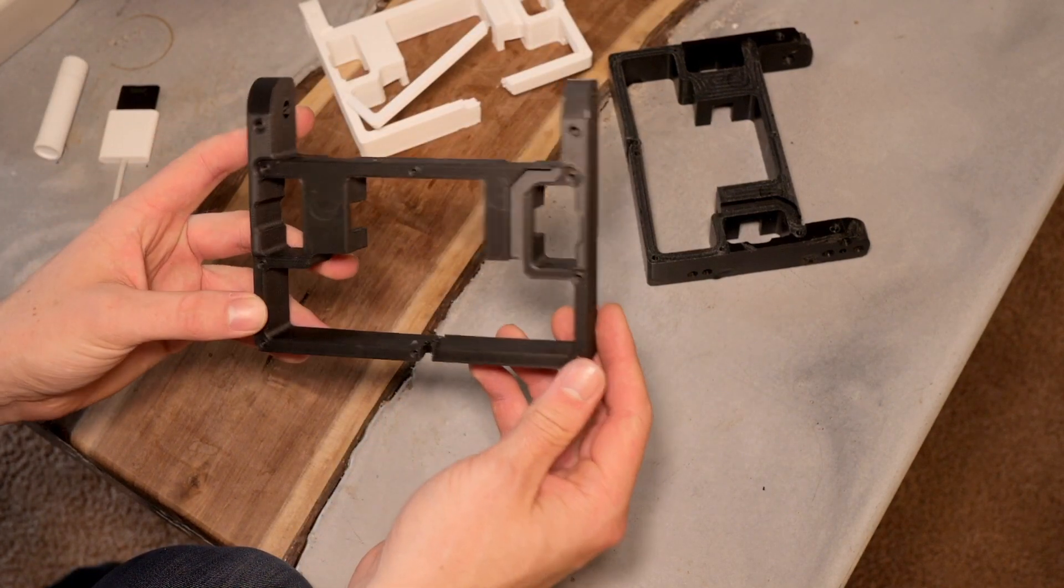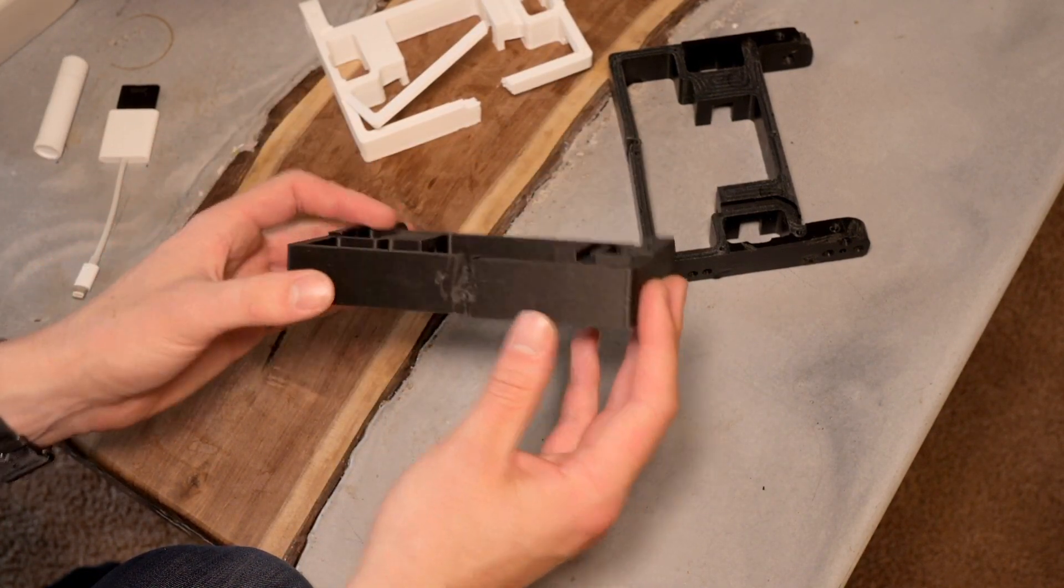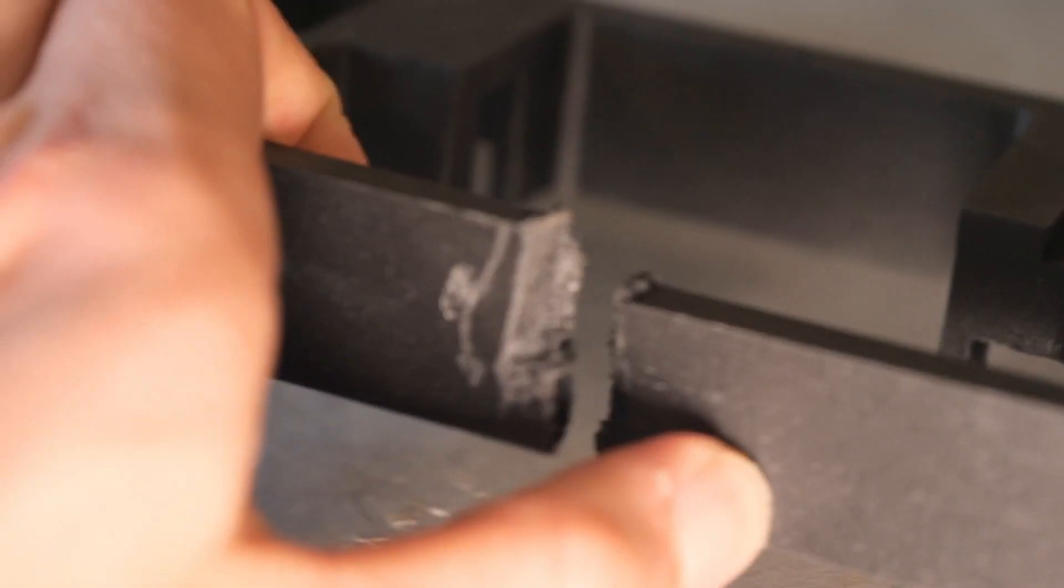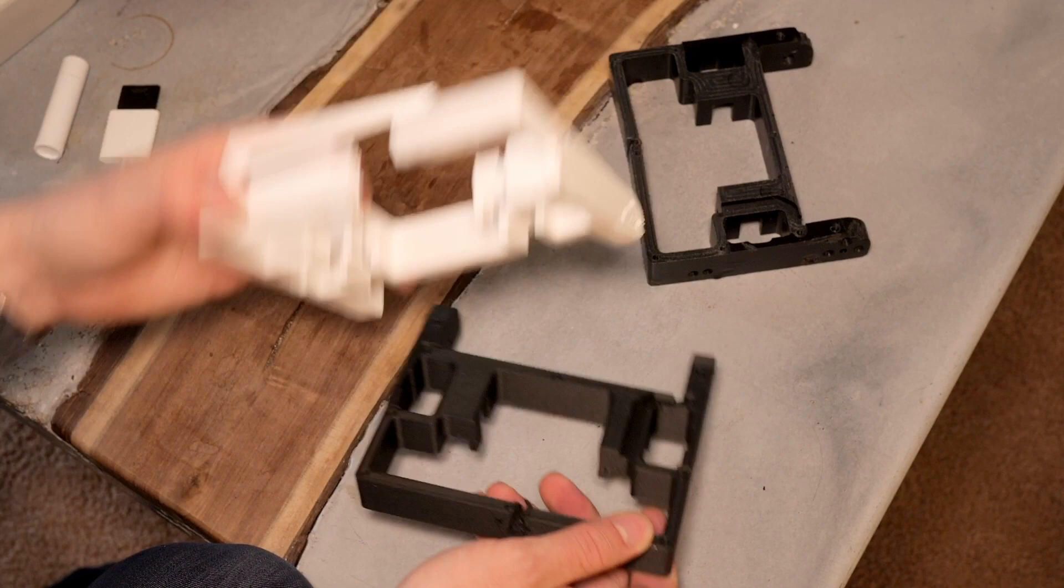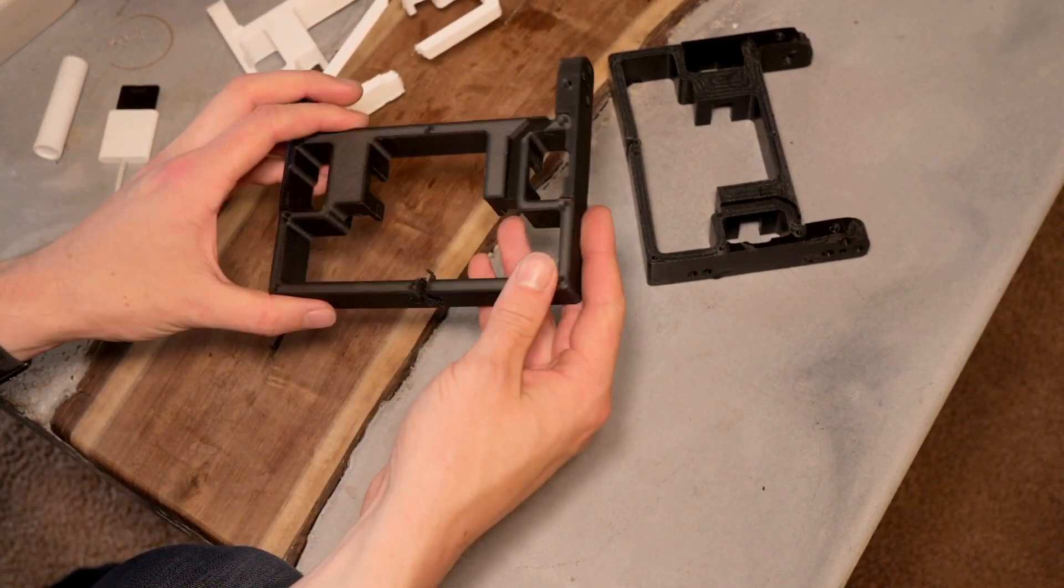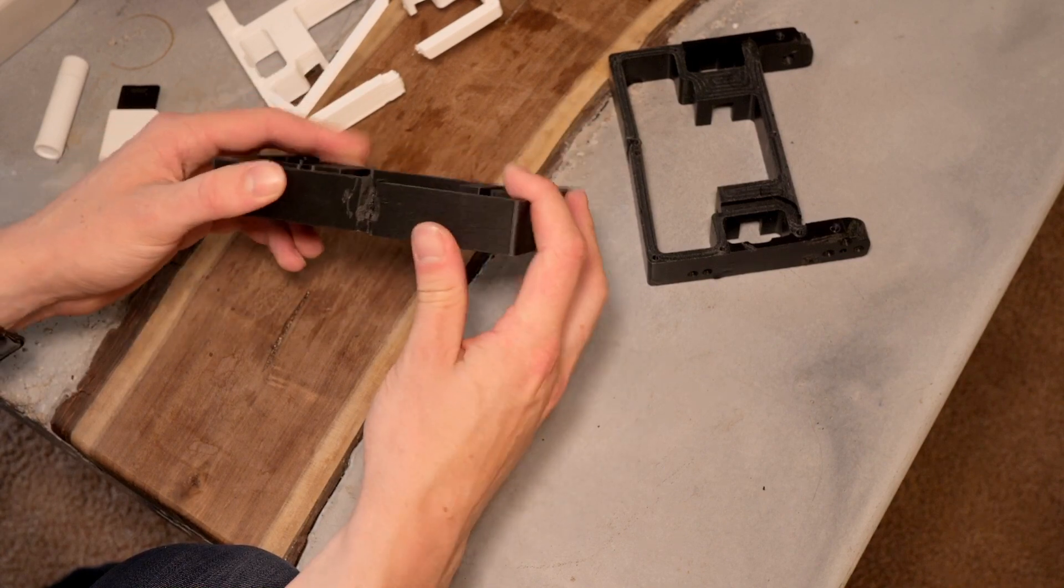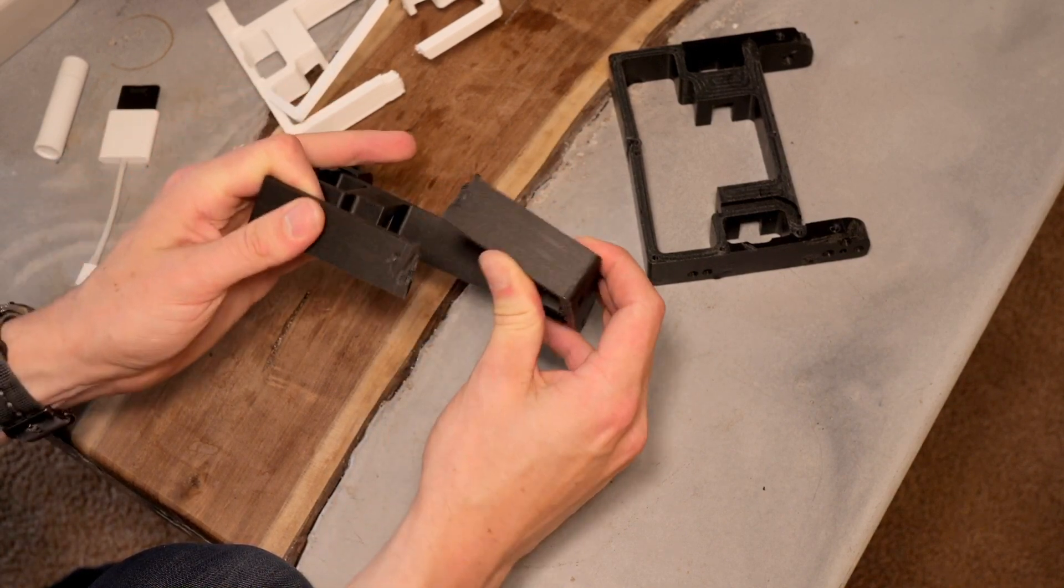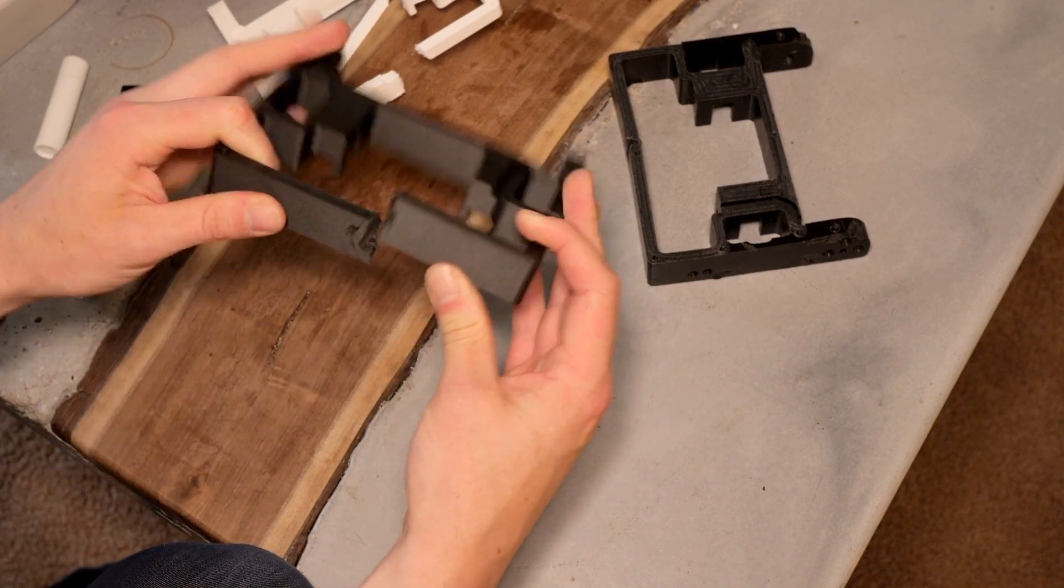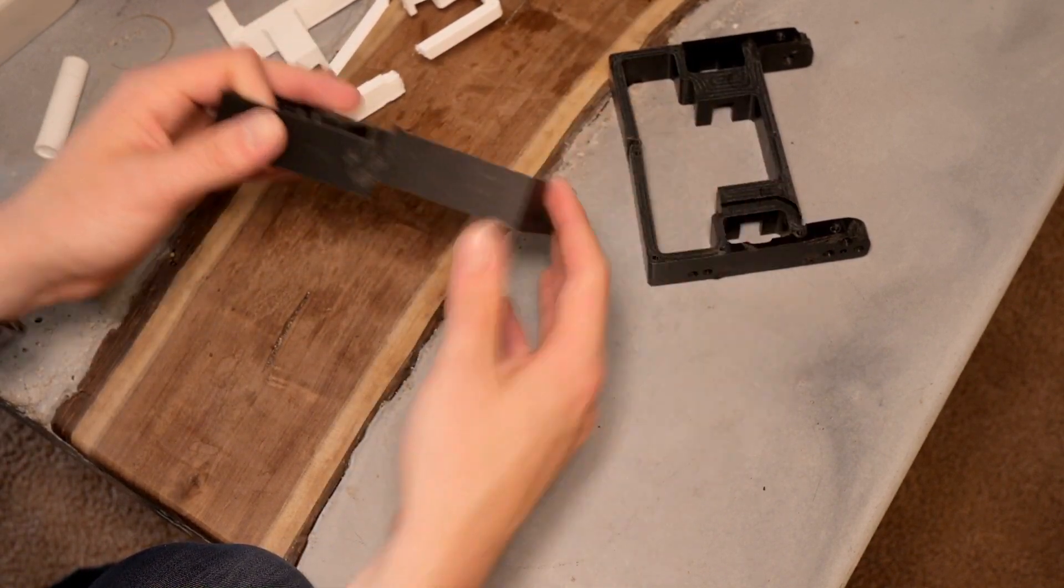Next up we have the Markforged part, which was doing so well right up until the end when it did split. No chunks came off like with the ABS part where there were just chunks flying. The Markforged print stayed as one unit because it's flexible enough that when one wall breaks free, it can bend quite a bit without a chunk kind of snapping.